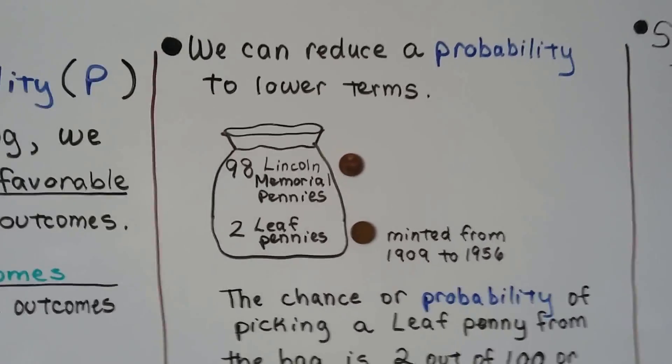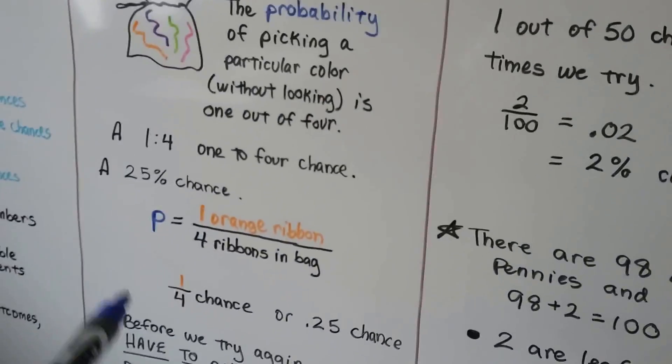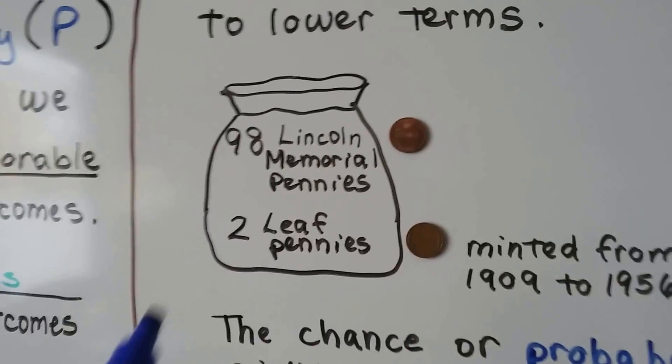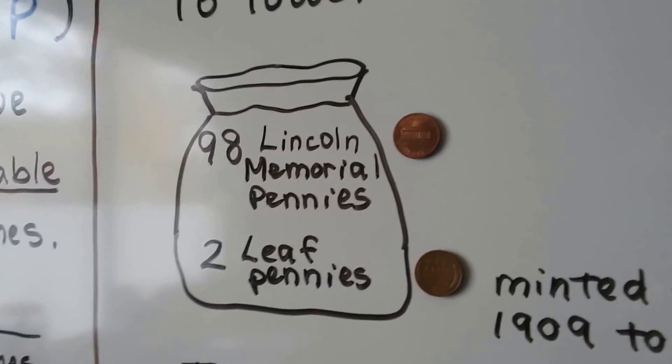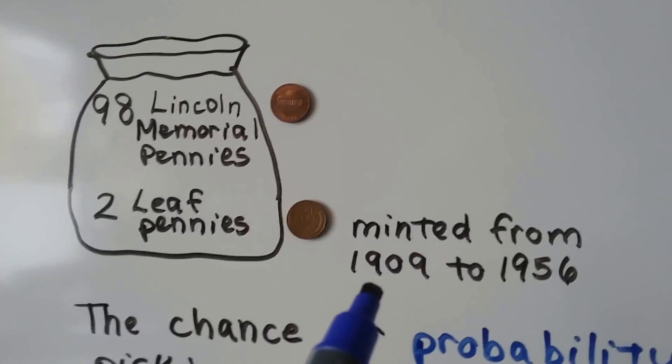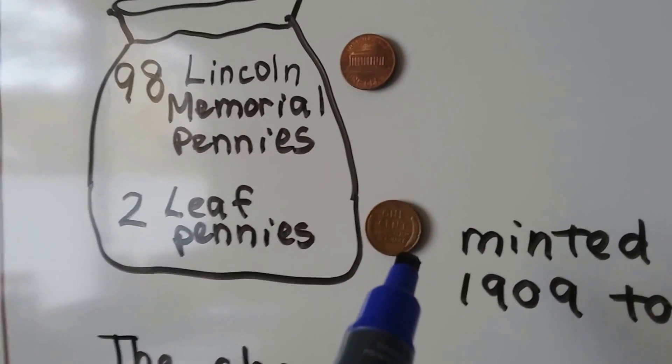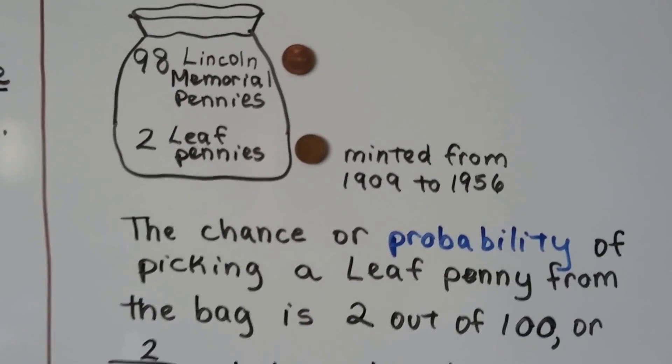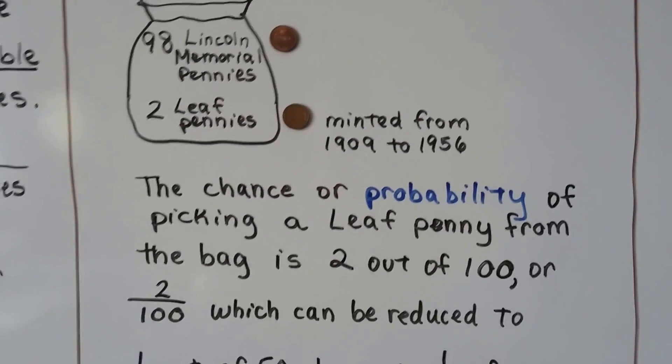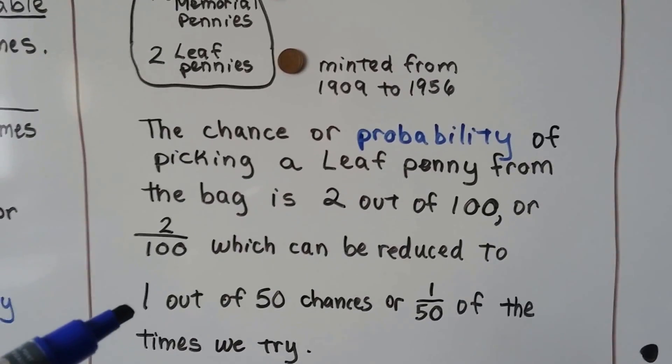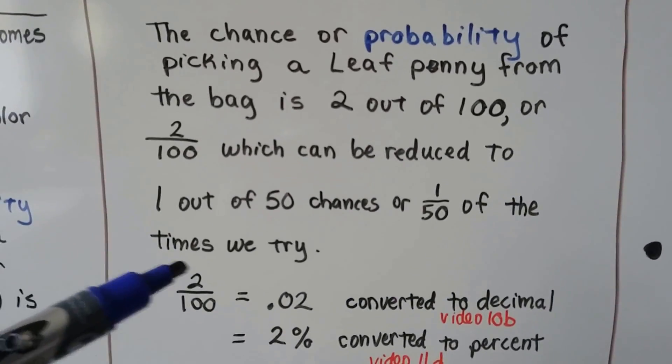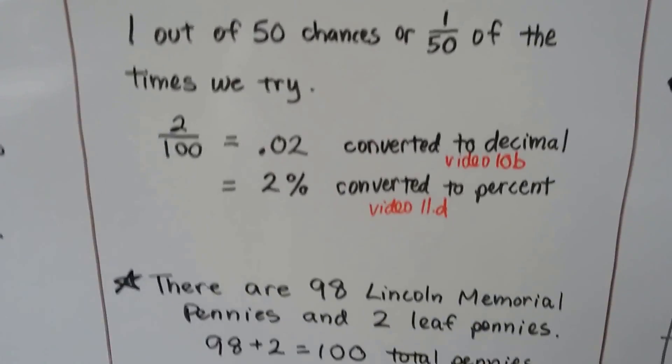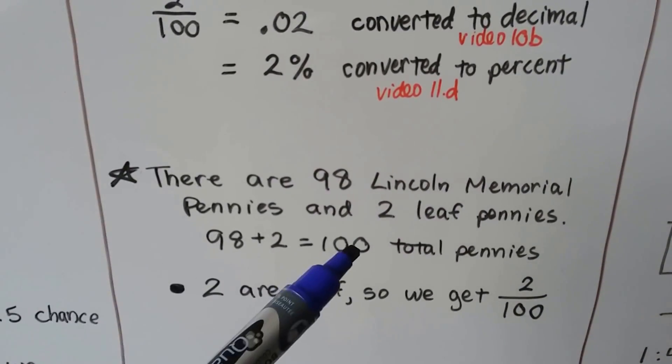And we can reduce a probability to lower terms because they're fractions sometimes. So if it's a fraction, it can be reduced to lower terms. So let's say we have this black bag and we can't see inside of it. And there's 98 Lincoln Memorial pennies, those are pennies that have the Lincoln Memorial on the back. And let's say there's two leaf pennies. So minted from 1909 to 1956, there were these leaf pennies that had wheat leaves on the back. There's one here and there's one here, they kind of curve. So the chance or probability of picking a leaf penny from the bag is two out of 100 or two one-hundredths. And that can be reduced to one out of 50 chances or one-fiftieth of the times we try. Two one-hundredths is equal to .02, converted to a decimal, or two percent if we convert it to a percent. And there's 98 Lincoln Memorial pennies and two leaf pennies. That totals 100 pennies.